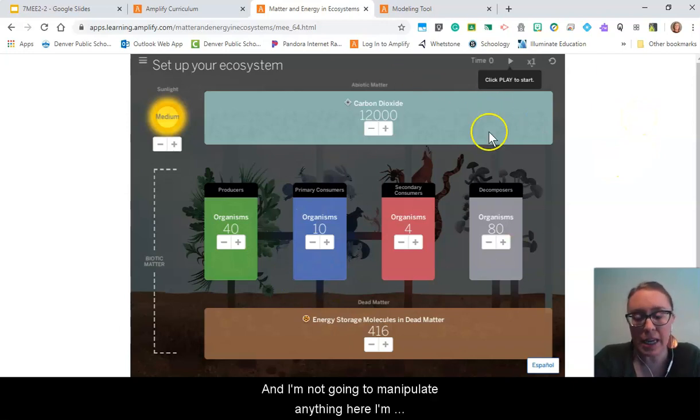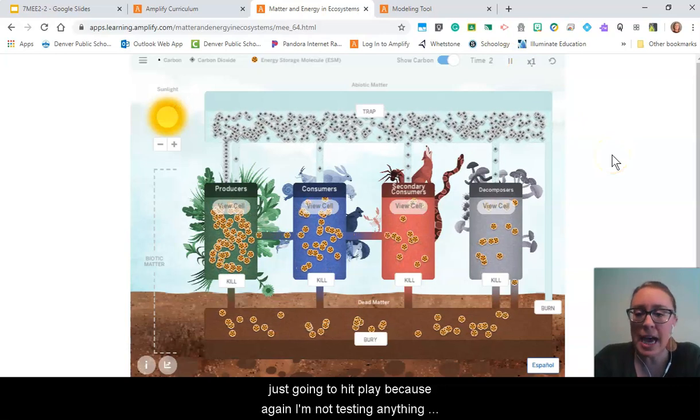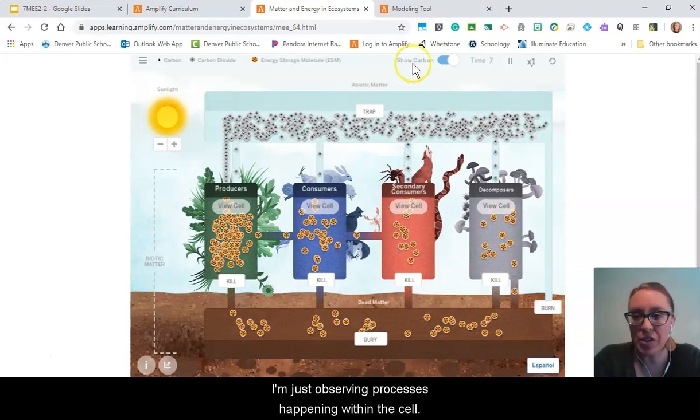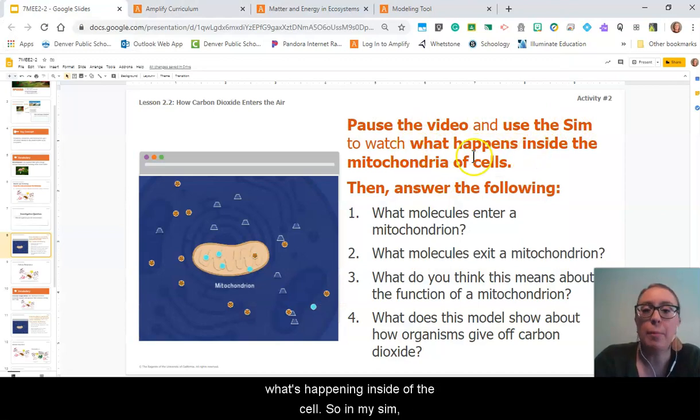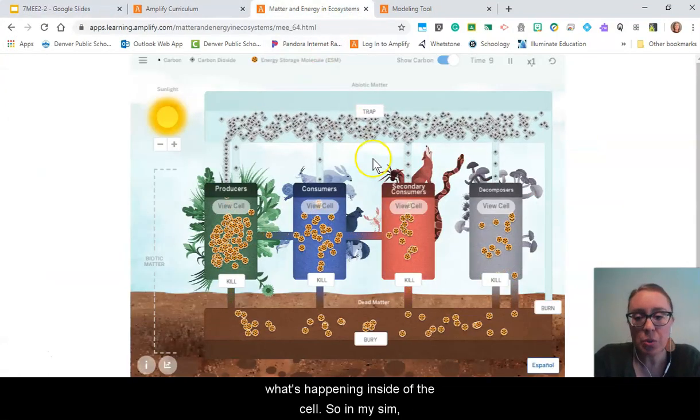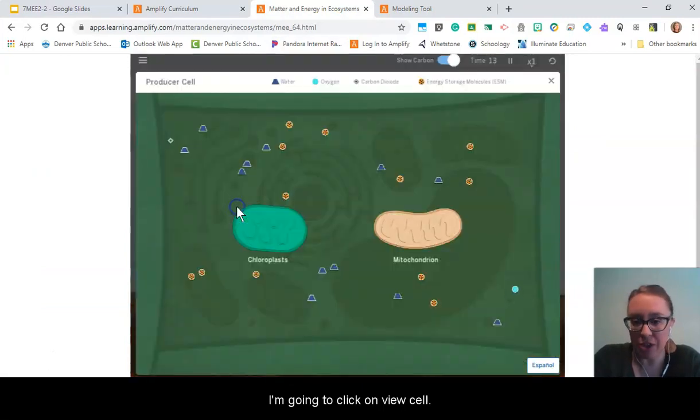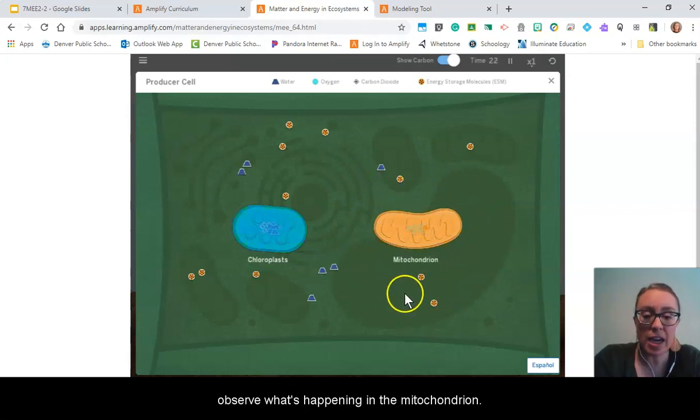I'm not going to manipulate anything here. I'm just going to hit play because I'm not testing anything, just observing processes happening within the cell. My directions stated that I want to look at what's happening inside of the cell. So in my sim, I'm going to click on view cell. My directions were specifically asking me to observe what's happening in the mitochondrion.